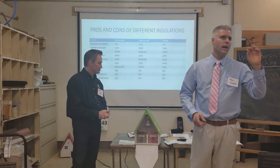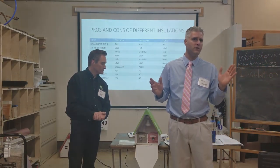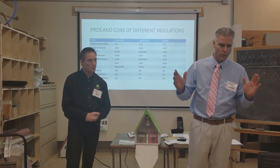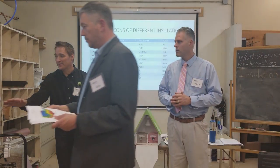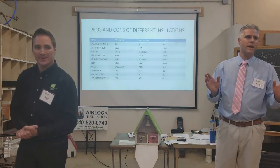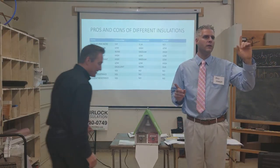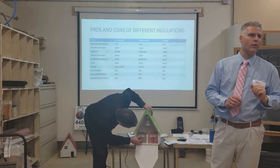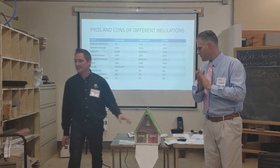Fiberglass can't compare to cellulose on air infiltration. Fiberglass is four air changes per hour versus cellulose at three air changes per hour. By the way, we did look up closed-cell foam properly installed — a perfectly installed closed-cell foam house gets two air changes per hour. The cellulose side read 72.3 degrees and the fiberglass side was 80.6 degrees.